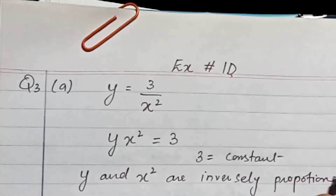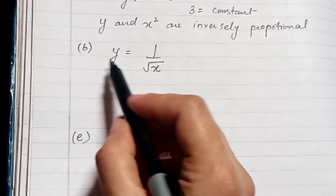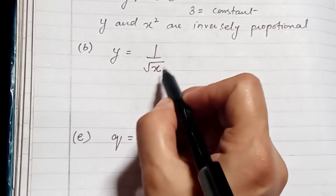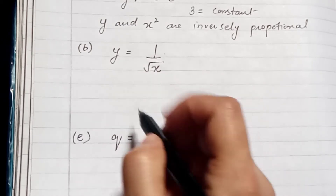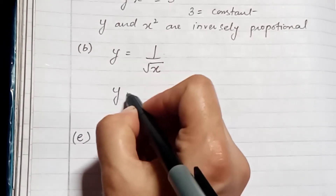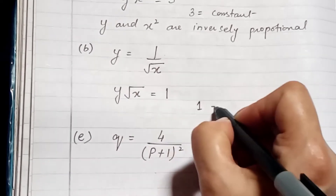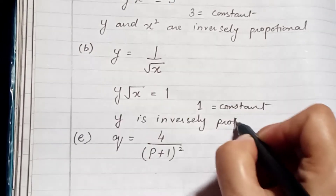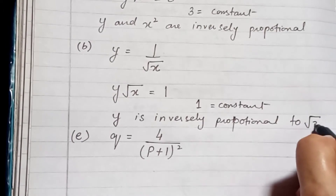In part (b) of question three, we have y equals 1 upon root x. Moving root x to the other side gives y·√x equals 1, and since 1 is a constant, y is inversely proportional to root x. You can write your answer in both forms.